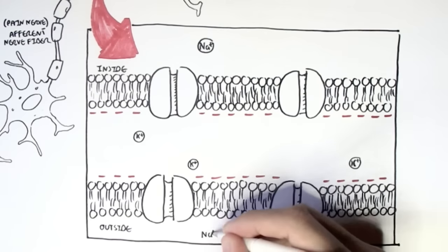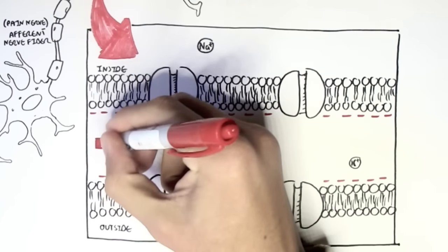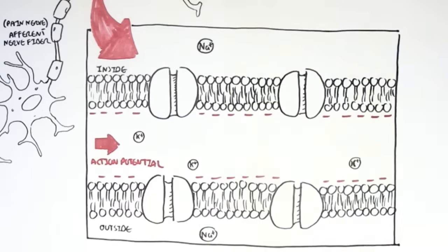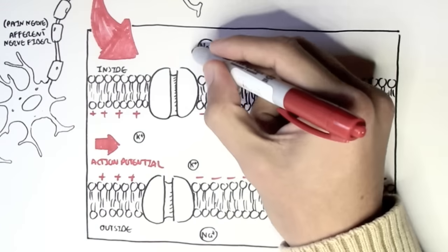When an action potential or impulse travels through along the neuron, the inside will become more positive, like so, because of the influx of sodium ions from the outside to the inside.